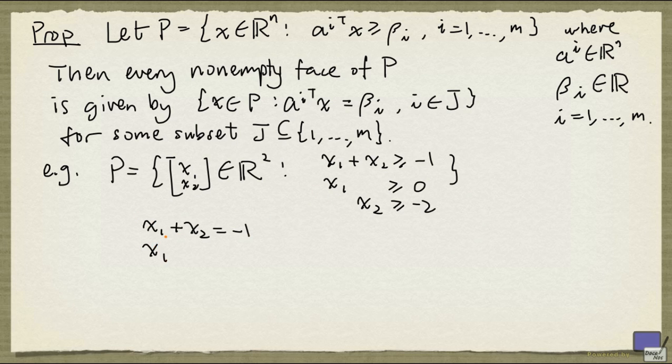So let's see what happens when we set the first two inequalities to equality. In that case, X₁ plus X₂ is minus 1, and X₁ is equal to 0. So that means we get a single point, X₁, X₂ equals 0, negative 1. And so the face that we get is just a single point, 0, minus 1. And if you're going to draw this polyhedron, it's going to look like this.